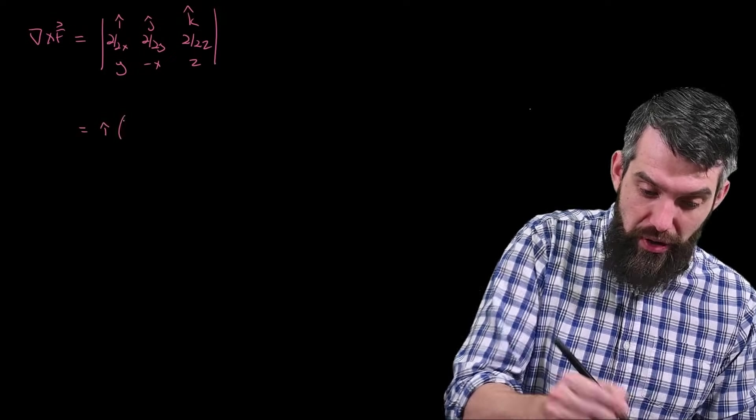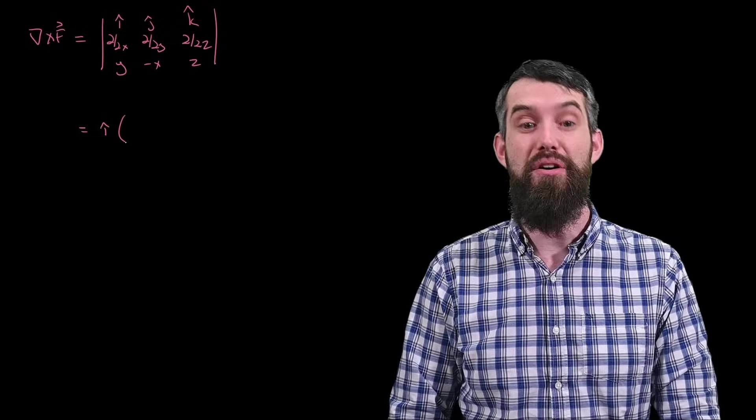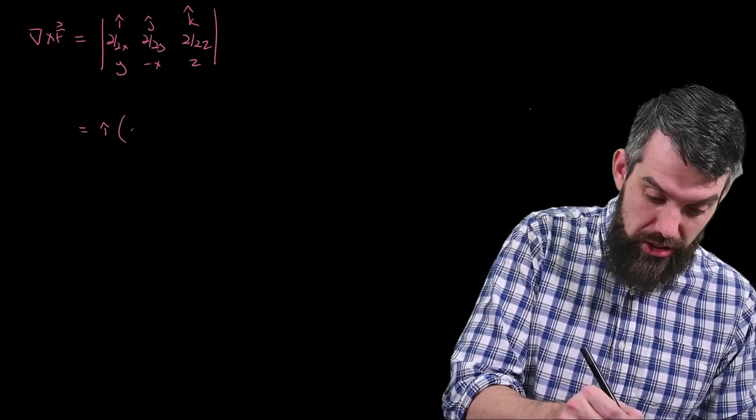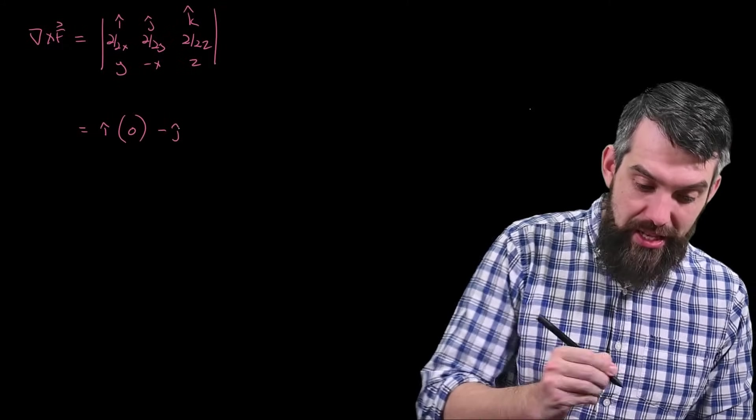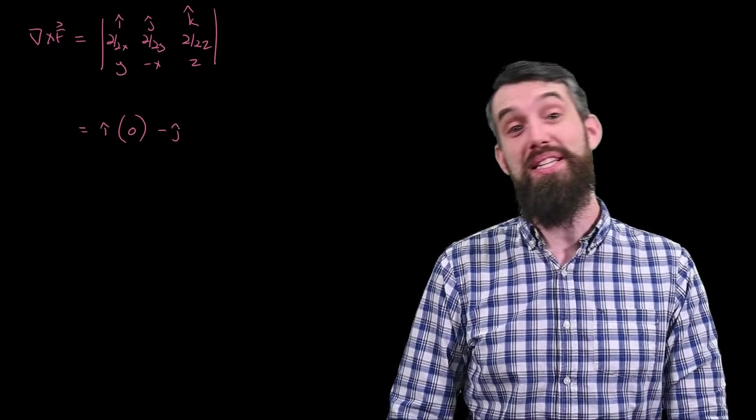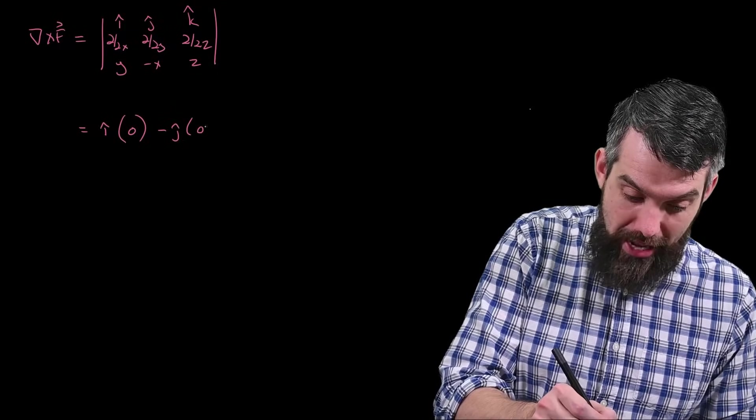Okay, so i-hat component first is going to be the partial with respect to y of z, which is 0, minus the partial with respect to z of minus x, which is 0, so just 0 in the i-hat. The minus j-hat is going to be the partial of y with respect to x minus the partial of z with respect to y, again 0, nothing there as well.